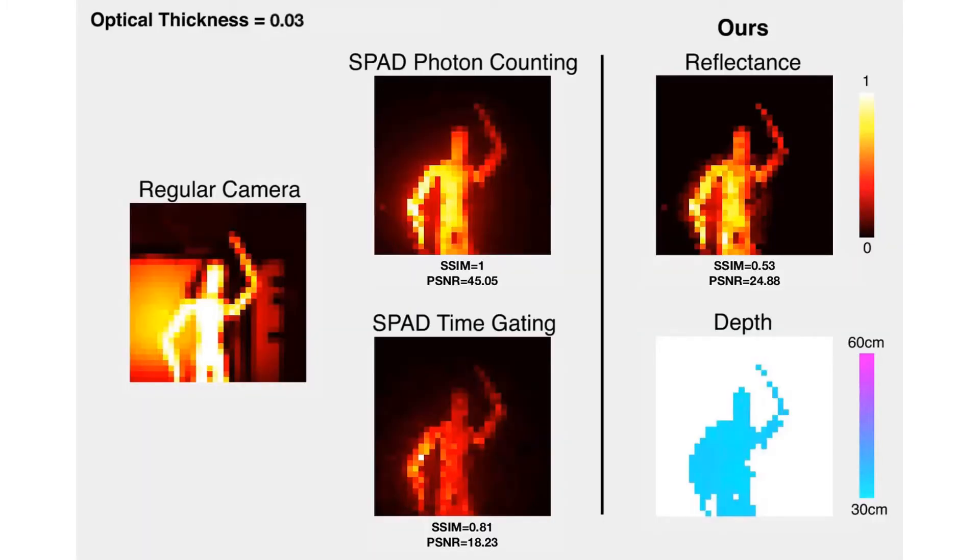Here are some of our results. We show the recovery over time as fog is added to the chamber. On the left are other methods for evaluation, including a regular camera. On the right is our reflectance and depth reconstruction.